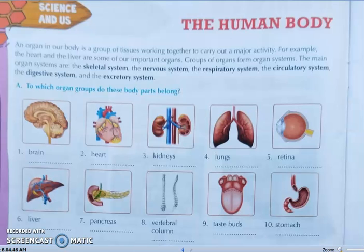Question number A: To which organ system does this body part belong? First, brain — the nervous system. Second, heart — the circulatory system. Third, kidney — the excretory system.